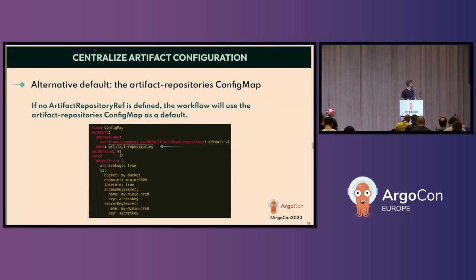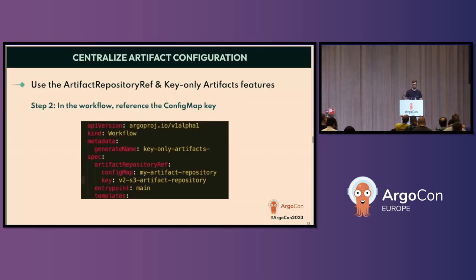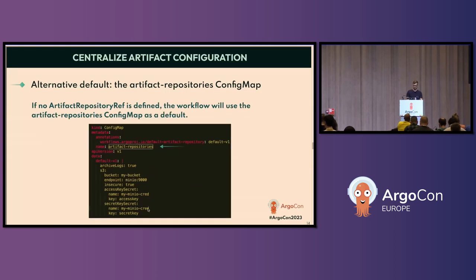If there is a particular config map called 'artifact-repositories' that you create, it will be the default — any workflow that is not defining the information within the artifacts themselves will by default use whatever is defined there.